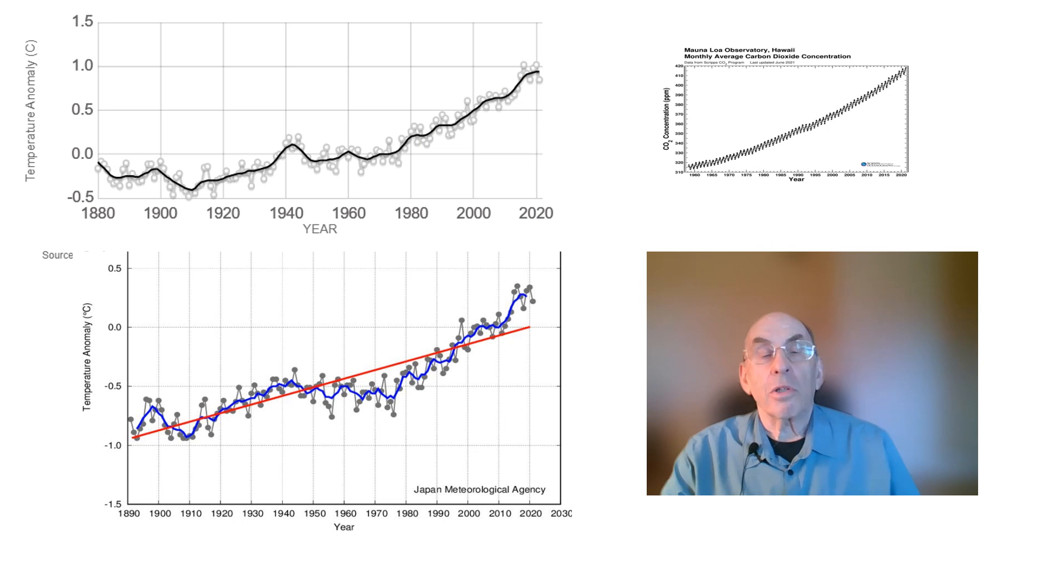The two charts on the left show the global average surface temperatures from the late 1800s to now. The top chart shows data from NASA while the bottom chart shows data from the Japan Meteorological Agency. While they are not identical, they are still in very good agreement.